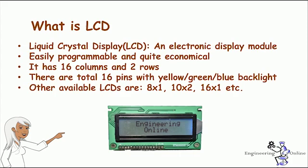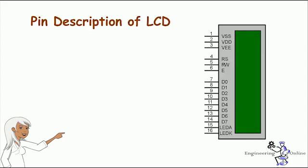A 16 by 2 LCD means it can display 16 characters per line and there are two such lines. Each character is displayed in a 5 by 7 pixel matrix. There are many combinations available like 8 by 1, 8 by 2, 10 by 2, 16 by 1, etc., but the most commonly used one is 16 by 2. In a 16 by 2 LCD there are overall 16 pins if there is a backlight, or 14 pins if there is no backlight.